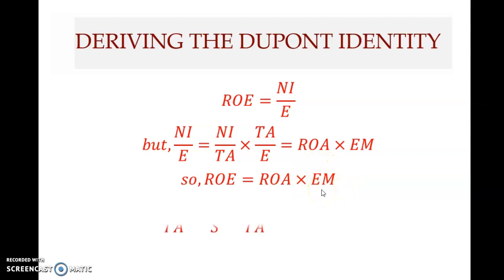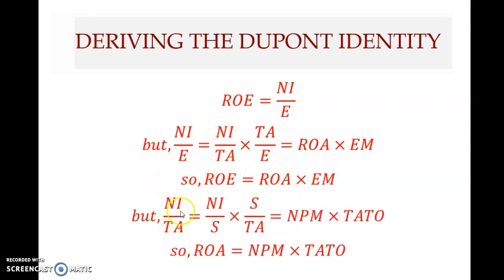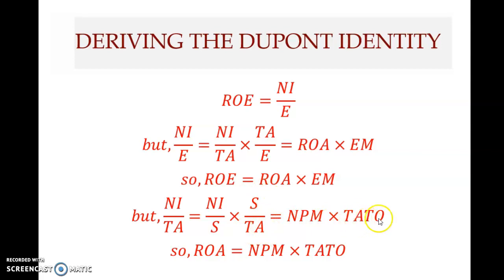We can expand further. ROA — net income over total assets — can be expanded by multiplying and dividing by sales, giving us two components: net income over sales, which is the net profit margin (NPM), and sales divided by total assets, which is total asset turnover (TATO). Therefore ROA equals net profit margin multiplied by total asset turnover.